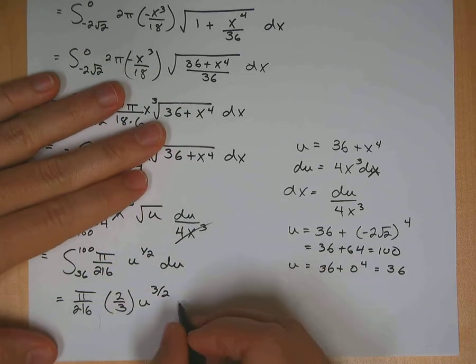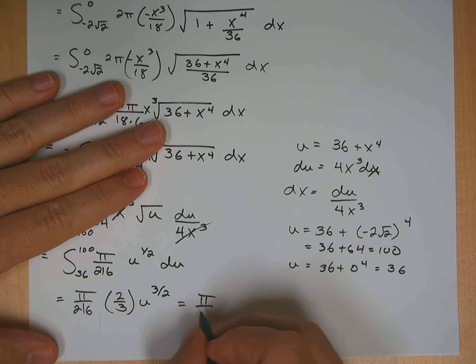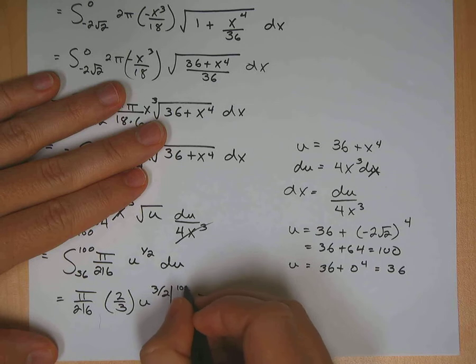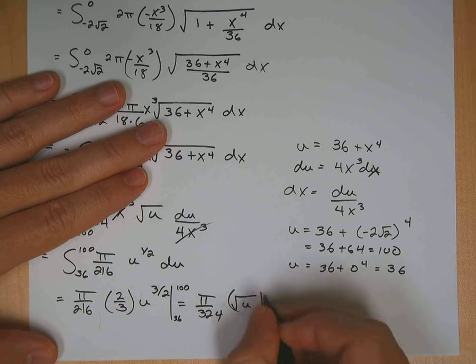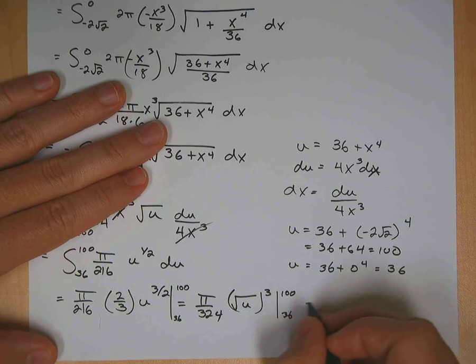When I do all this here, so it's pi over, don't forget my limits, 324. My limits were from 36 to 100. Let's see. This is going to be the square root of u cubed from 36 to 100. And we're almost done.